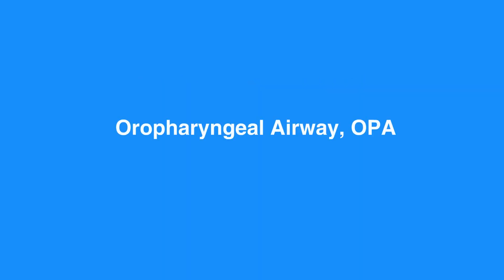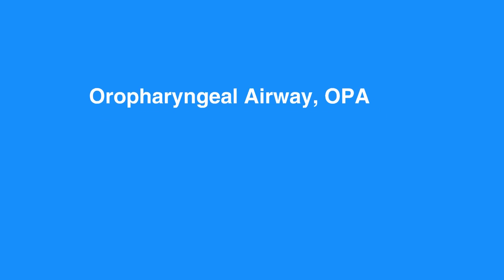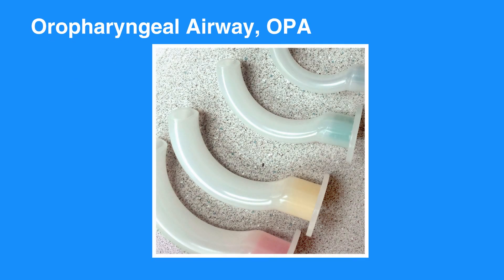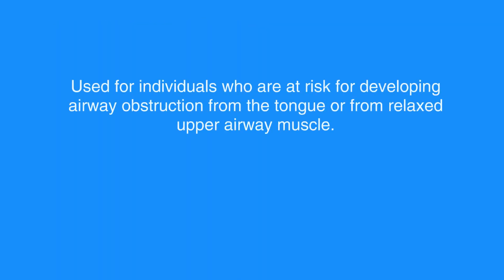The oropharyngeal airway, or OPA, is a J-shaped device that fits over the tongue to hold the soft hypopharyngeal structures and the tongue away from the posterior wall of the pharynx. OPA is used in individuals who are at risk for developing airway obstruction from the tongue or from relaxed upper airway muscle.